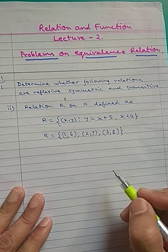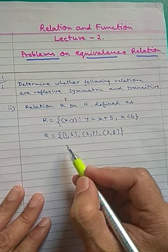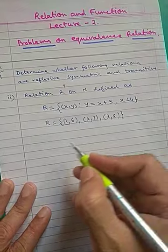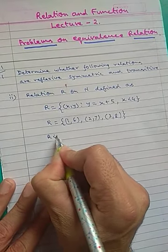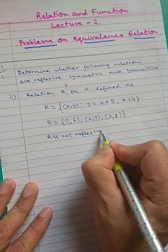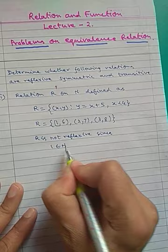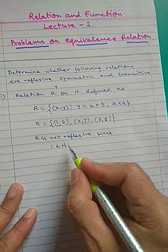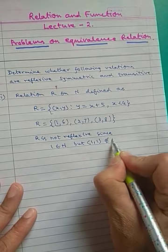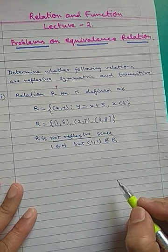Now, is R reflexive? By definition, for R to be reflexive, (a, a) must belong to R for all a belonging to set A. R is not reflexive since 1 belongs to ℕ but (1,1) does not belong to R.